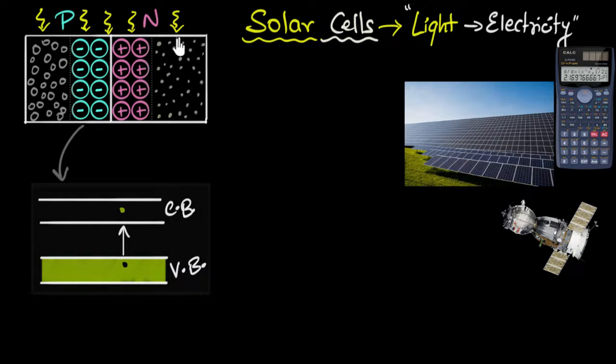Now, when this happens outside of the depletion region, when the electron hole pairs are formed outside of the depletion region, immediately the electron will recombine with that hole and will release that energy back. And so that process would be useless. We do not get any electric generation because of that.